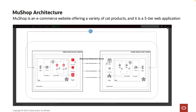For this demo, we are going to use a MuShop application which is deployed in OCI. MuShop is a sample e-commerce website offering a variety of CAD products and it is a three-tier web application. We have two regions: Ashburn is our primary and Phoenix is our standby. From a database perspective, we use autonomous database. The Ashburn region has the primary autonomous database, and in the standby region Phoenix, we have the standby autonomous database where autonomous data guard has been used for configuring the standby database.